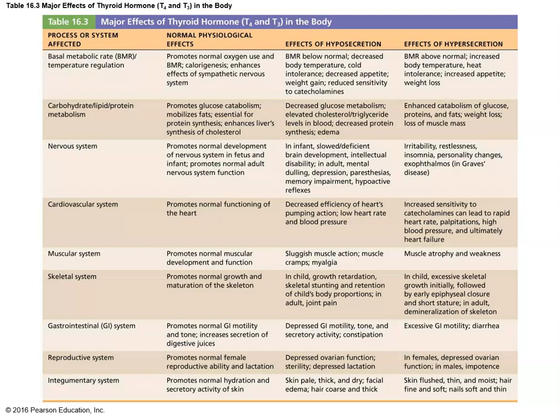Thyroid hormones affect how quickly you utilize calories, cardiovascular function, nervous system, muscular system — they promote normal function across essentially every body system. If your thyroid gland isn't working properly, you'll have metabolism issues but also problems with every other part of the body, because thyroid hormone promotes normal function throughout.